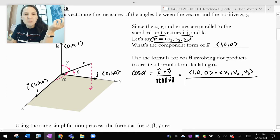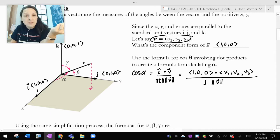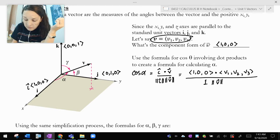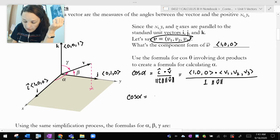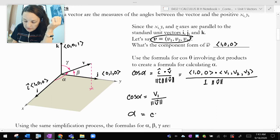Divided by the magnitude of i. Well, i is (1, 0, 0). It's a unit vector. So the magnitude of i is 1. And then the magnitude of v, I'm honestly just going to leave as the magnitude of v for now. And if you notice on the top, when I go to do my dot product, my zeros are going to make v2 and v3 disappear. And all I'm going to be left on top is with v1. So cosine alpha is just v1 divided by the magnitude of v. And that's how you can get alpha.